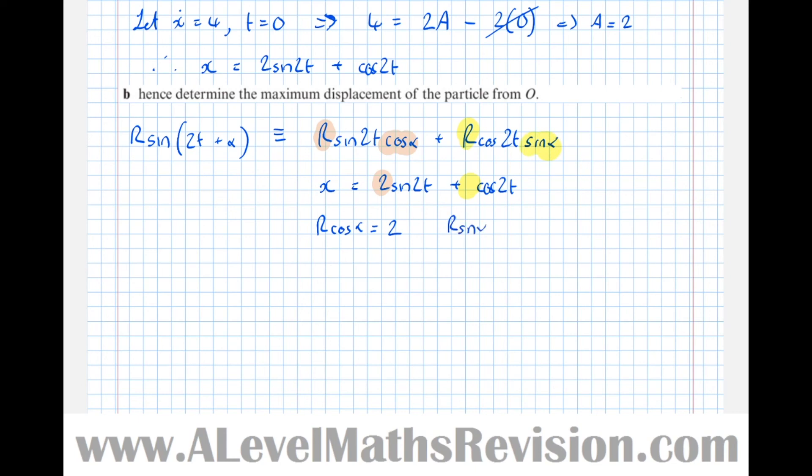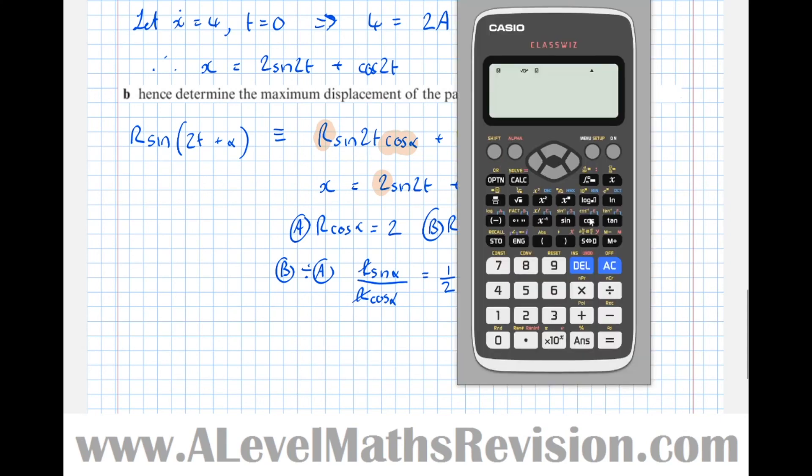We'll call this first equation a and the second equation b. If we do b divided by a we get r sine alpha over r cos alpha, the r's cancel, which equals one half. This means that tan alpha equals one half, which means that alpha equals arc tan of a half, which equals 0.464.